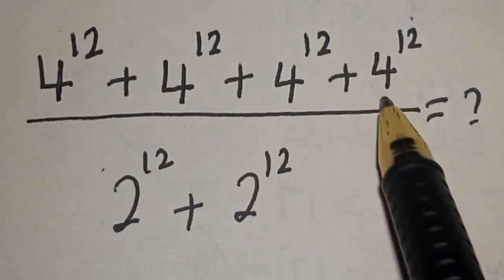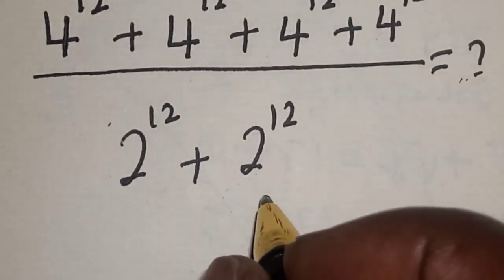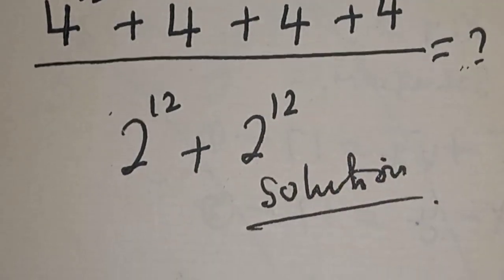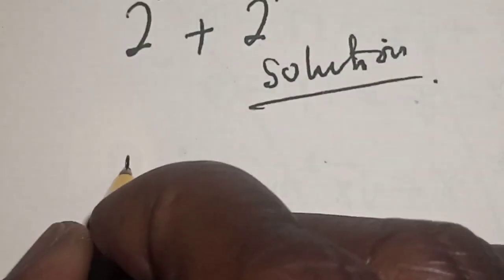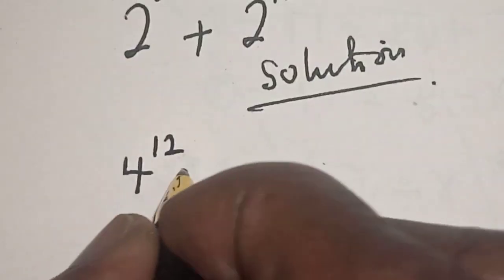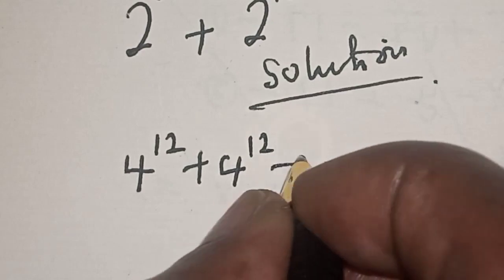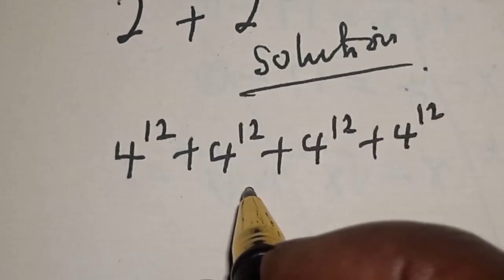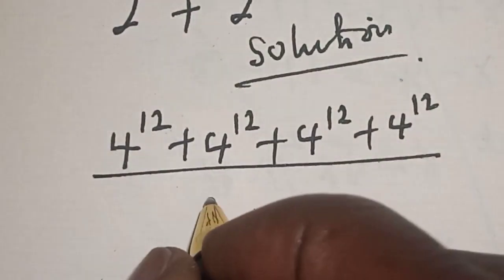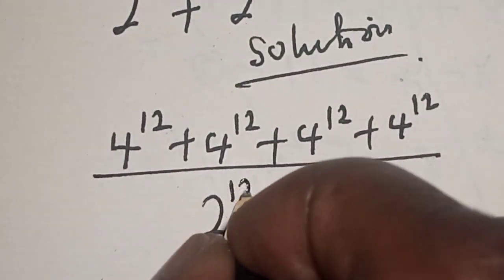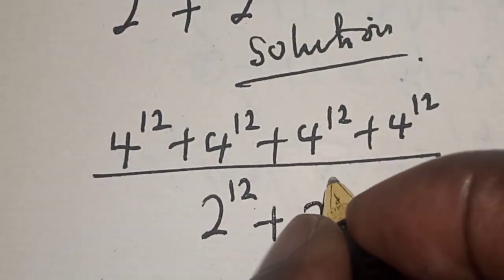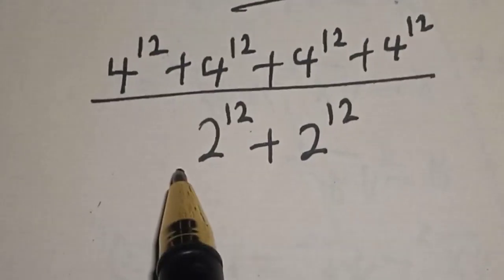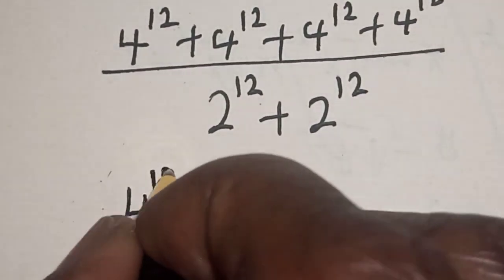Solution: we have 4 raised to power 12 plus 4 raised to power 12 plus 4 raised to power 12 plus 4 raised to power 12, all divided by 2 raised to power 12 plus 2 raised to power 12. For the numerator, 4 raised to power 12 is common — let's bring it out.